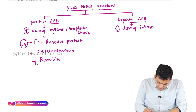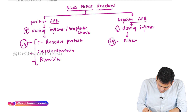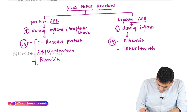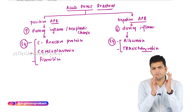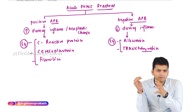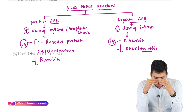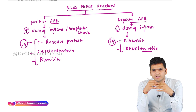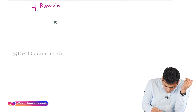Fibrinogen is also an example of a positive acute phase reactant. The negative acute phase reactants include albumin and transthyretin. So to summarize, some molecules increase and some molecules decrease during inflammation — that is the core concept behind acute phase reactants.